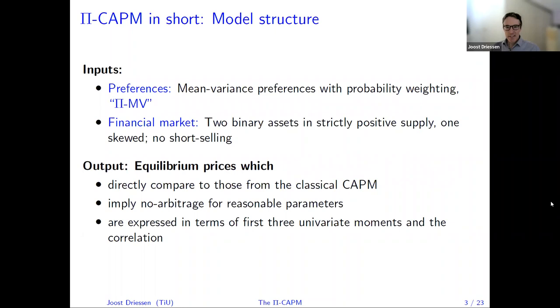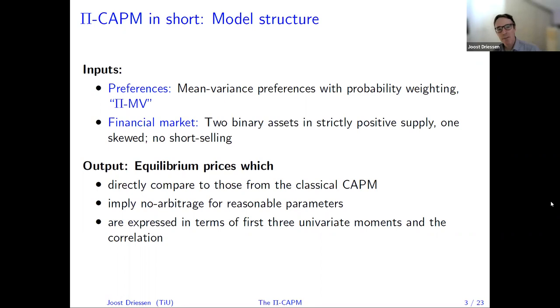The input of the model is very simple. We start with mean-variance preferences and add this probability weighting, so we call these PI and V preferences. That's the preference side — just one parameter added to the mean-variance model.